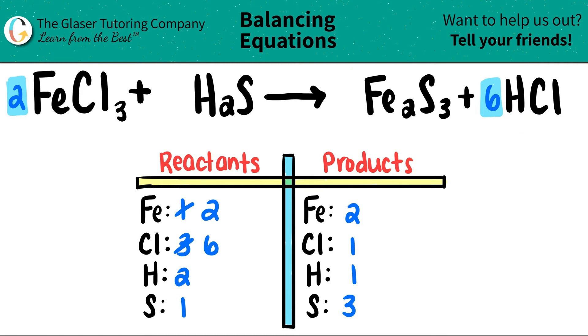But since they both just had ones, six times one is just six. So both of these would turn into sixes.